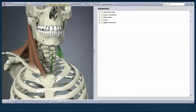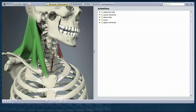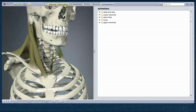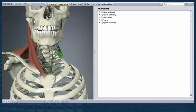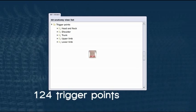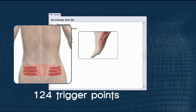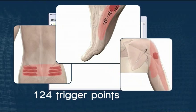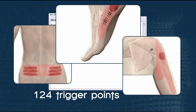Access a range of animated sequences showing normal muscle function in visually stunning 3D. An extensive library of 124 trigger points is also accurately shown on the 3D models with associated referred pain areas.